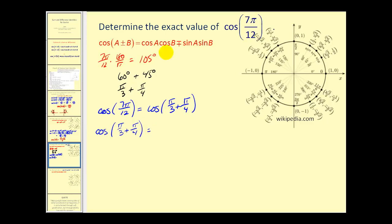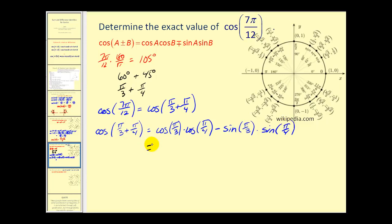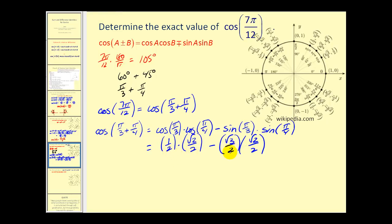Using the identity with a sum means we use a difference: cosine a times cosine b minus sine a times sine b. Cosine of pi over three is the x-coordinate on the unit circle, or one half. Cosine of pi over four is square root two over two. Sine of pi over three is square root three over two. Sine of pi over four is square root two over two. With a common denominator of four, the cosine of seven pi over twelve equals square root two minus square root six, all over four.